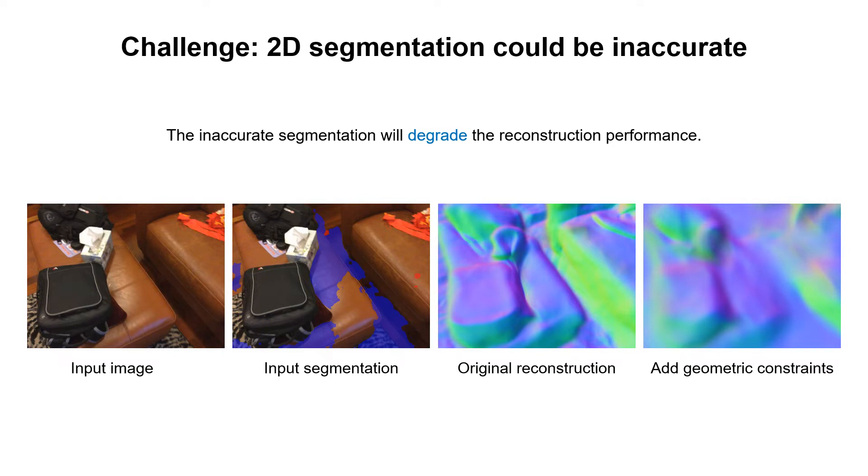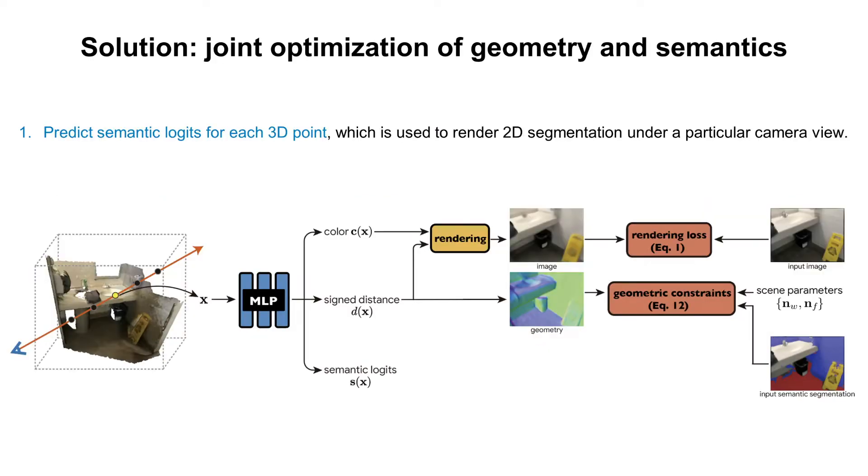However, 2D semantic segmentation results predicted by the network could be wrong in some regions, which leads to inaccurate reconstruction. To solve this problem,